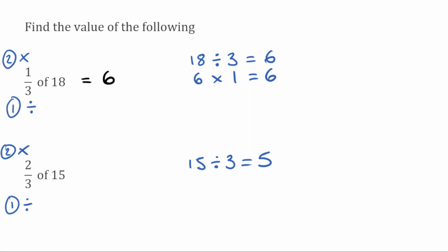So that would be our unit fraction, that would be what one third would be equal to. We've then got to take that 5 and multiply it by the numerator which in this case is 2. So we have 5 multiplied by 2 which is 10. So our answer to two thirds of 15 would simply be 10.